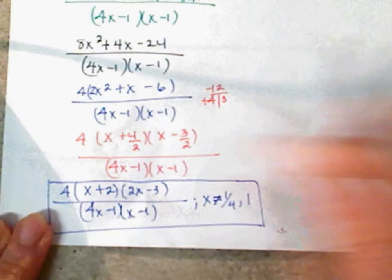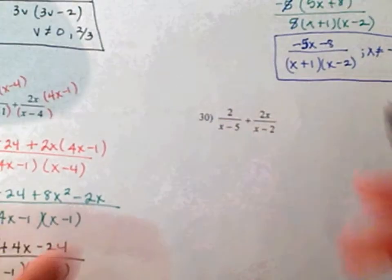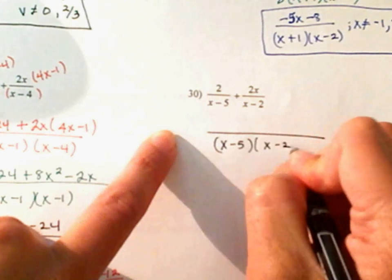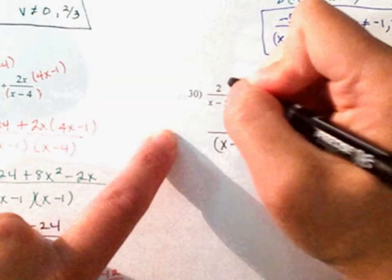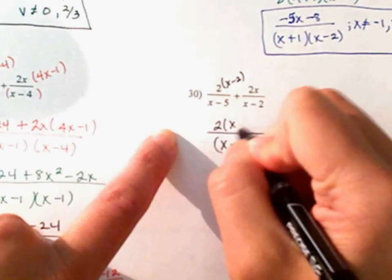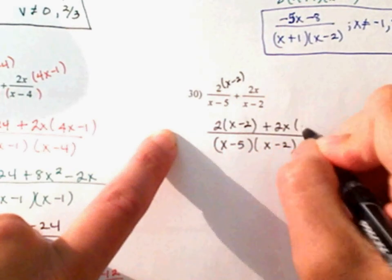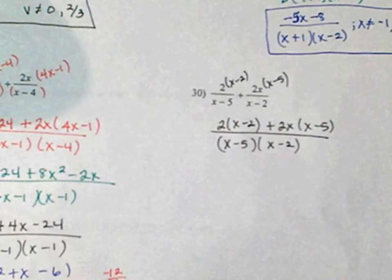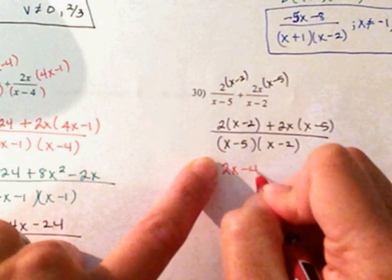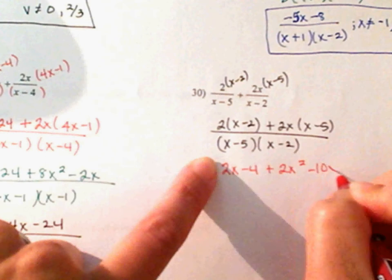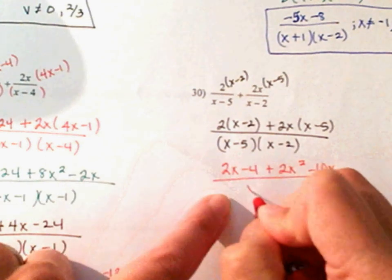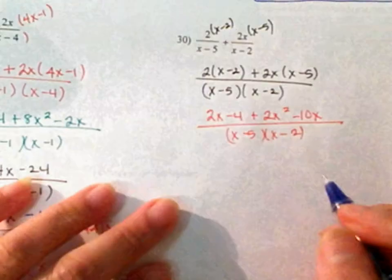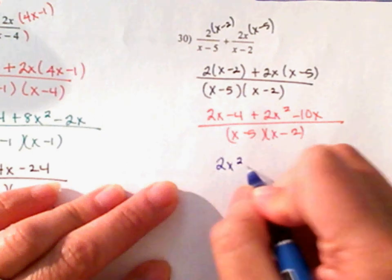Let's look at number 30 — last one, guys. Draw: x minus 5, x minus 2, one of each. So I'm missing x minus 2. So 2 times x minus 2 plus 2x times x minus 5. Continue with your math: 2x minus 4 plus 2x squared minus 10x, all of it over x minus 5 times x minus 2. Combine your like terms — I'm going to write my square first: 2x squared minus 8x minus 4.